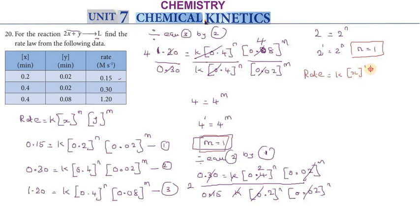The rate law is: rate equals k times X to the power n times Y to the power m. Since n equals 1 and m equals 1, rate equals k times X times Y. Now we can find k. Using the first data point: 0.15 equals k times 0.2 times 0.02.